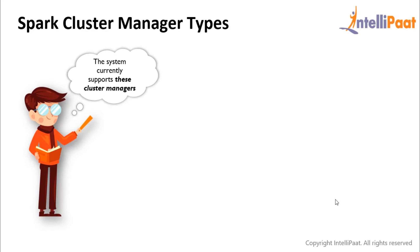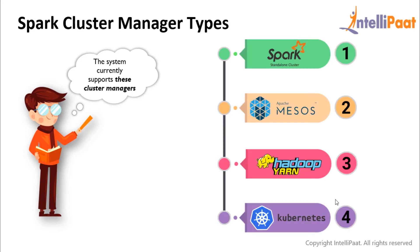Now let us see the various ways by which Spark can be deployed. The system currently supports these cluster managers: Spark Standalone, which is a simple cluster manager included with Spark that makes it easy to set up a cluster; Apache Mesos, a general cluster manager that can also run Hadoop MapReduce and service applications; Hadoop YARN; and finally Kubernetes, an open source system for automating deployment, scaling, and management of containerized applications.